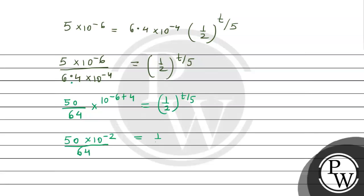Solving this portion: 50 divided by 64 becomes 50 divided by 6400, cancel the zeros, equals 1 by 2 raised to power t by 5.